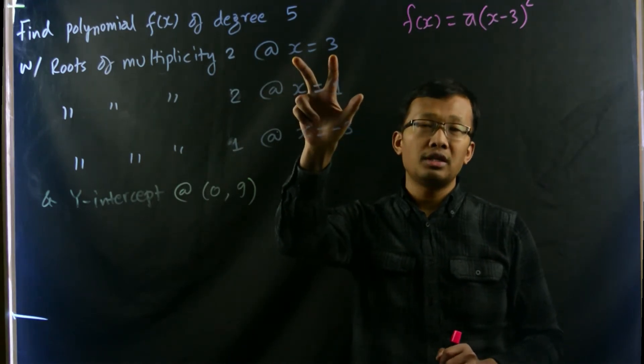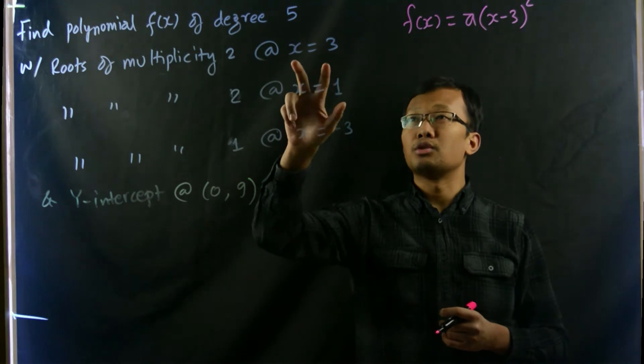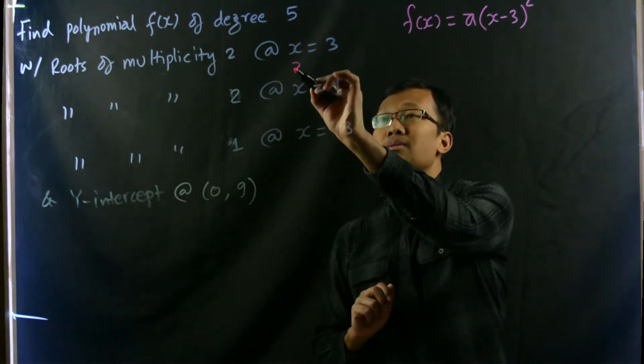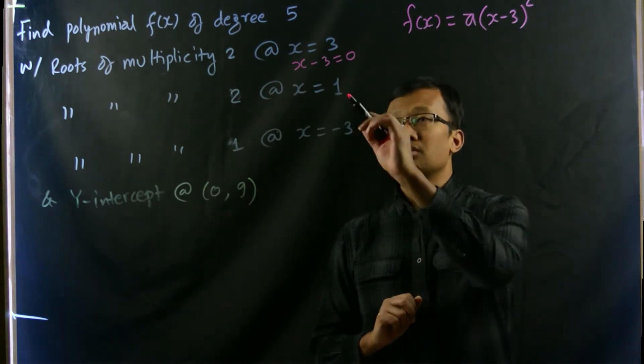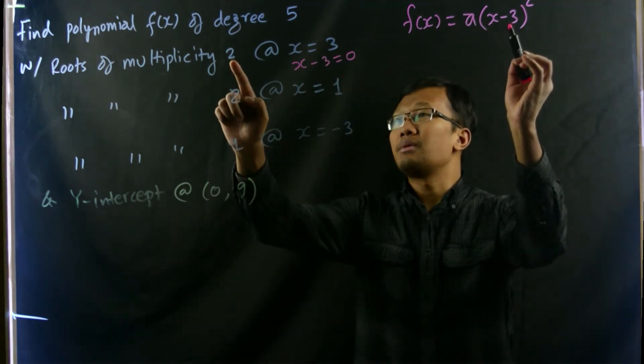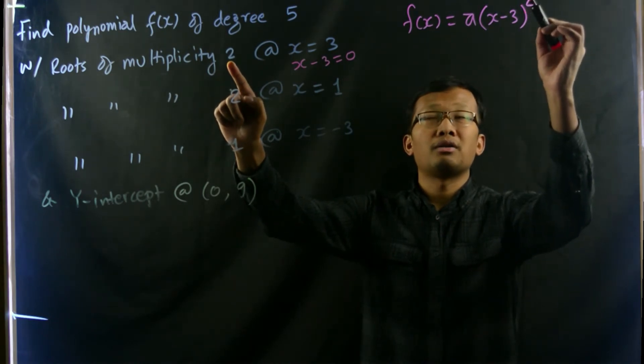Since x equals 3 is the root of the given polynomial function, x equals 3 means simply x minus 3 equals 0. So that's why x minus 3 is there, and multiplicity 2 means it is repeated for two times. So we write down the power in this way.